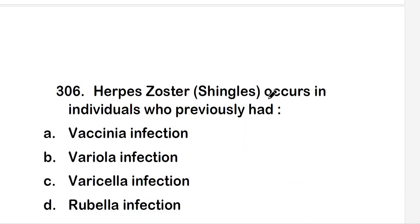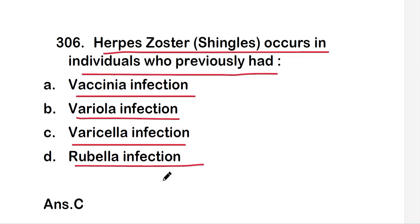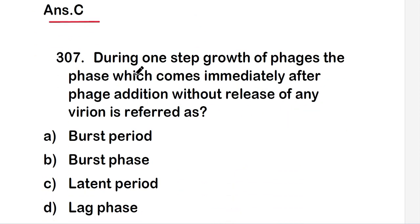The next question is: herpes zoster, that is shingles, occurs in individuals who previously had — vaccinia infection, variola infection, varicella infection, or rubella infection? The right answer is option C, that is varicella infection. So herpes zoster occurs in individuals who previously had varicella infection.